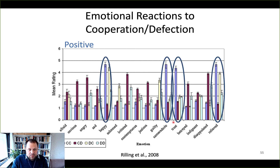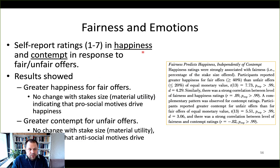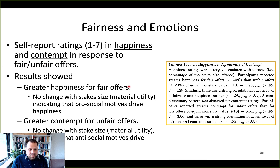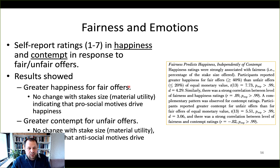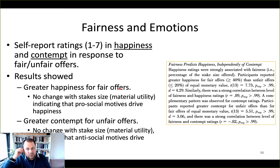People feel happy in those situations. They feel social emotions like camaraderie and trust, and they feel relief because the outcome could have been a worse one. We've also talked about the Tabibnia paper, which took self-report ratings about different outcomes in the ultimatum game — specifically about happiness and contempt in response to fair or unfair offers. The results clearly showed greater happiness for fair offers, independent of how much money participants were getting on a given trial, because fairness was orthogonalized to monetary stake size.